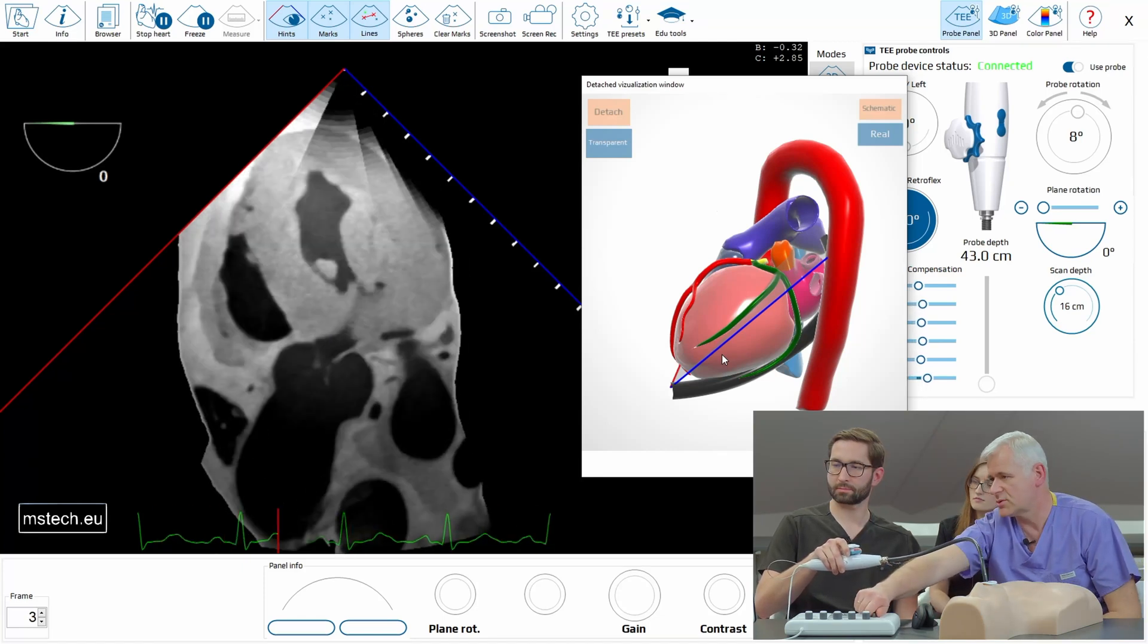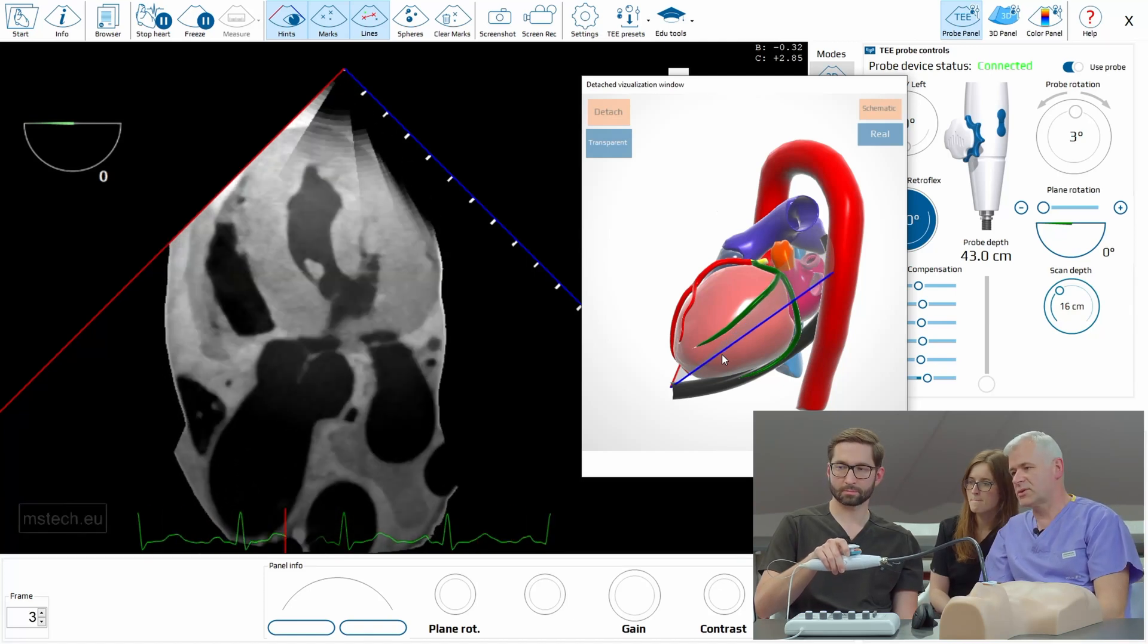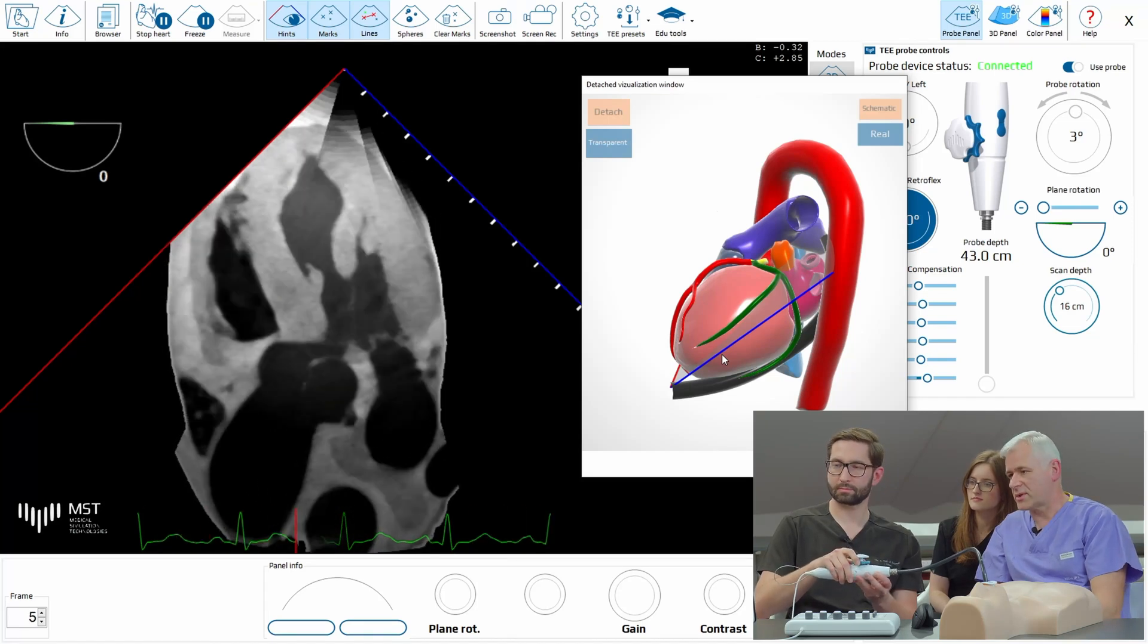Here of course you can also use the Doppler, the spectral Doppler to measure some aortic pathology. But you have to know how to get there.